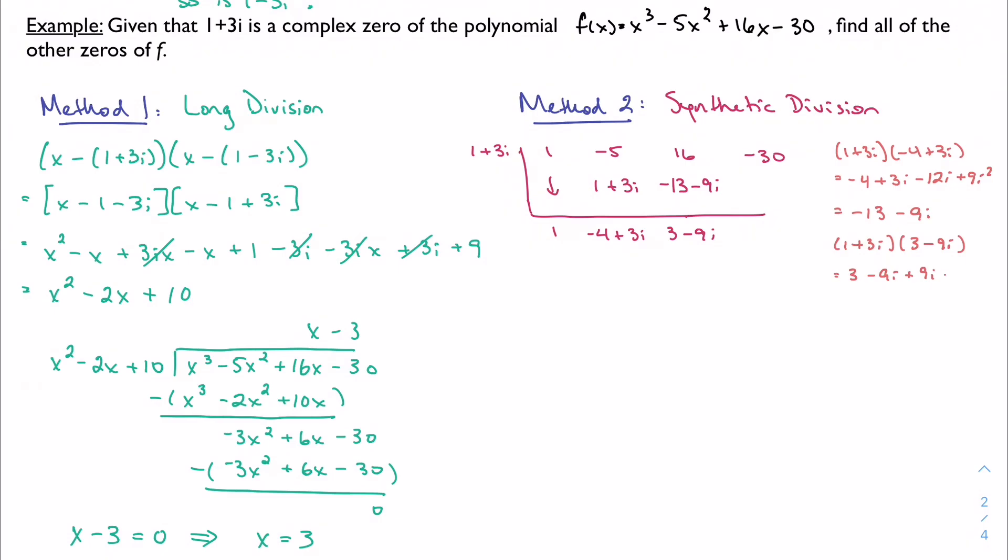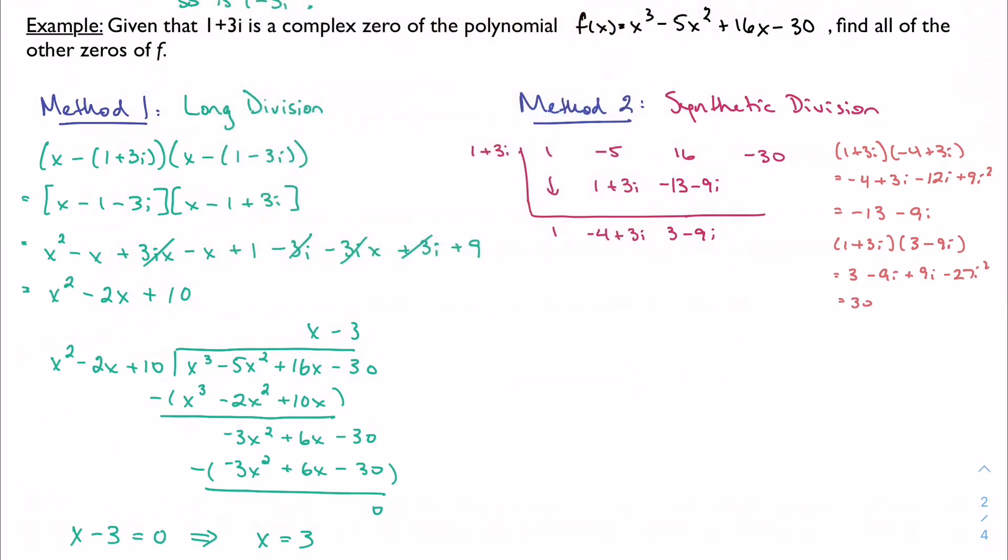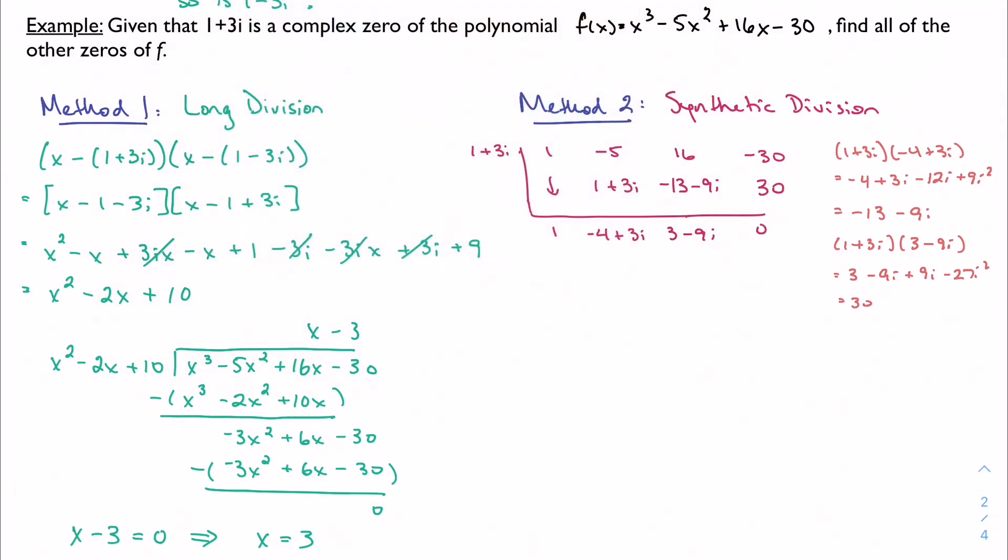That looks like minus 27i squared. So it's plus 27, I get 30. It's really nice. I got 0, so I know it's a factor.